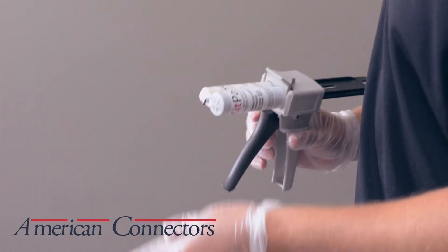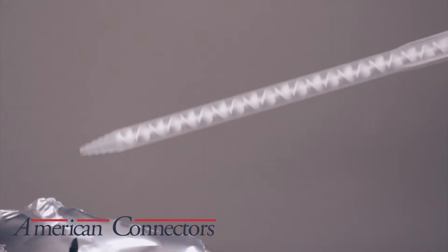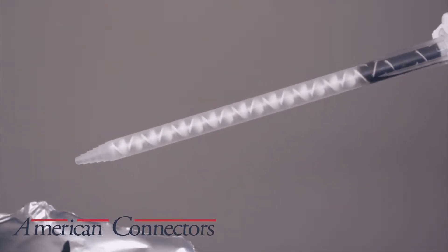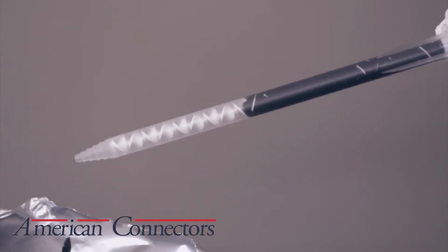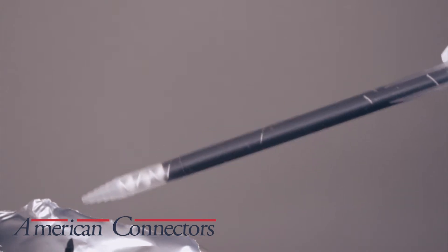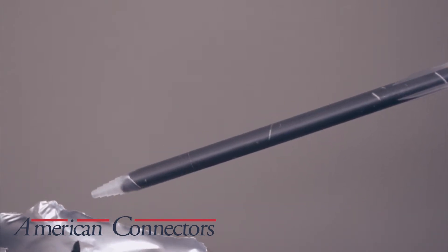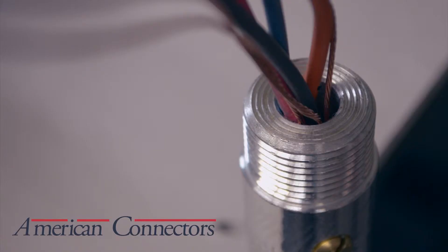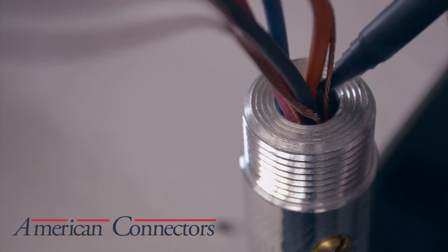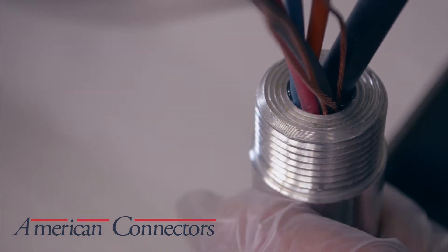Then attach the nozzle. The resin and the hardener will mix as it flows through the nozzle. No hand mixing or kneading is required. Once the connector has been installed on the cable, you may fill the connector from the top.